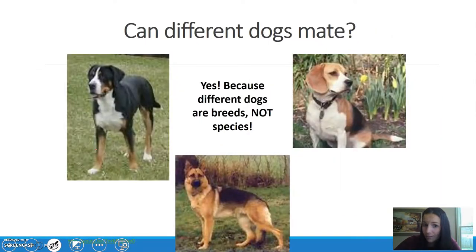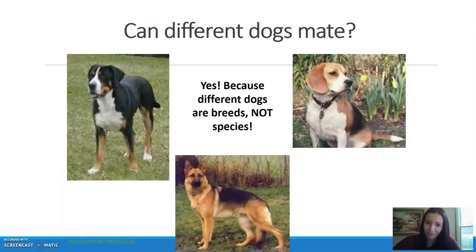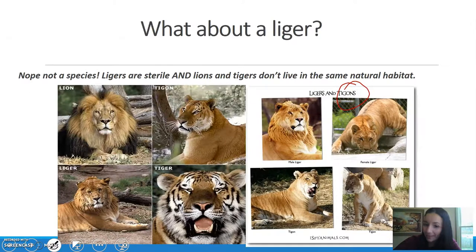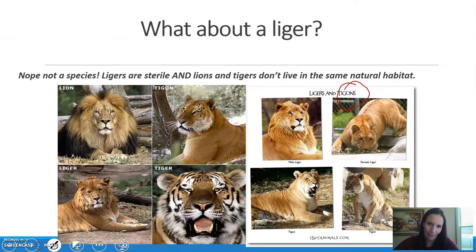What about dogs? Dogs are different breeds, not species. They can all mate, and dogs can also mate with wolves. What about a liger? Ligers — or tigons — are not species for two reasons: first, they are sterile, so you can't mate two ligers and get baby ligers. Second, lions and tigers don't even live in the same natural habitat, so that would also disqualify a liger as a species.